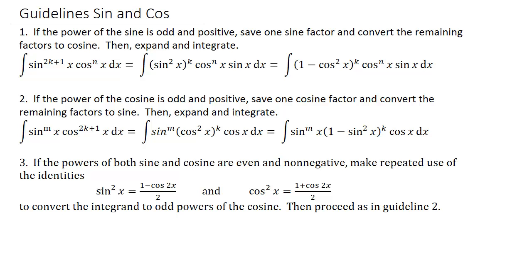Then expand and integrate. The second one: if the power of the cosine is odd and positive, save one cosine factor and convert the remaining factors to sine, then expand and integrate. The third one: if the powers of both sine and cosine are even and non-negative, make repeated use of the identities — sine squared x equals (1 minus cosine 2x) over 2, and cosine squared x equals (1 plus cosine 2x) over 2 — to convert the integrand to odd powers of cosine. Then proceed as in guideline 2.